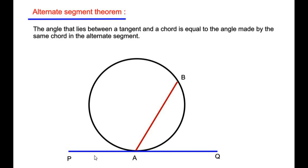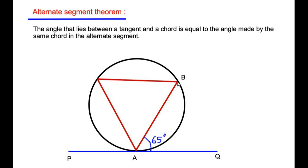To illustrate: if there is an angle of 65 degrees made between the tangent and chord AB, then the same chord makes an angle in the alternate segment. If the chord is in the minor segment side, the angle appears in the major segment. According to the alternate segment theorem, that angle in the alternate segment is also equal to 65 degrees.